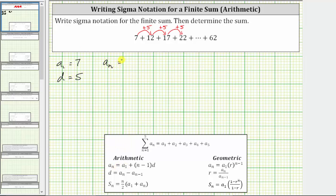A sub n is equal to a sub one, the first term, which is seven, plus the quantity n minus one, times the common difference d, which is five.